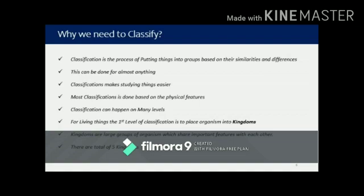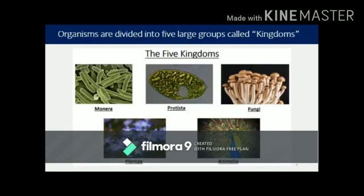This classification is done at different levels. We are studying the first level of classification here, where we arrange organisms into larger groups called kingdoms. There are five kingdoms, and this five kingdom system was proposed by R.H. Whittaker in 1969. The five kingdoms are Monera, Protista, Fungi, Plantae, and Animalia.